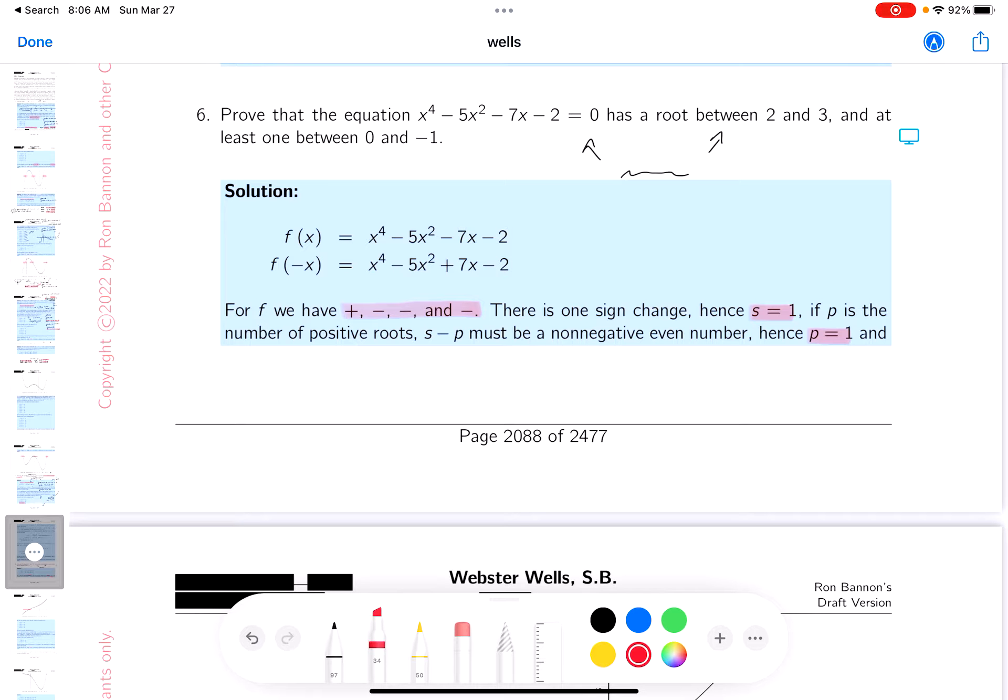So what I'm going to do then to show the positive root, and that's what they want me to do, positive root between 2 and 3, all I have to do now is analyze the function between 2 and 3. And I'm using the intermediate value theorem.